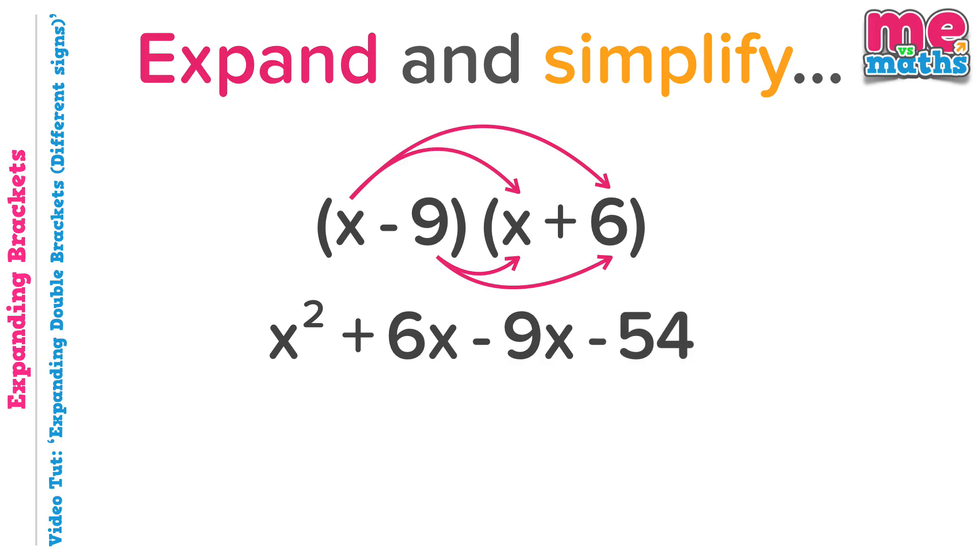Again, no surprise, we need to simplify the part in the middle. Plus 6x minus 9x. So this time we're starting 6 above 0 in the positives, but if we subtract 9, we'll get down to minus 3 or minus 3x. So our final simplified answer is x squared minus 3x minus 54.